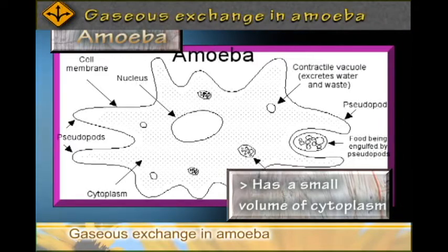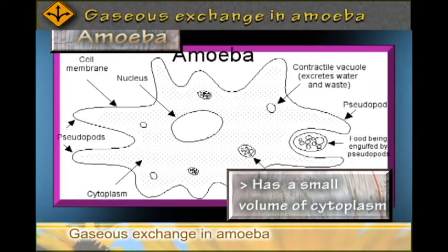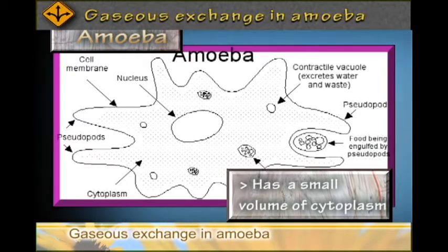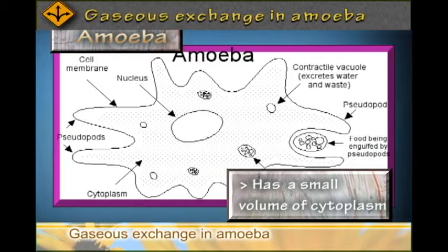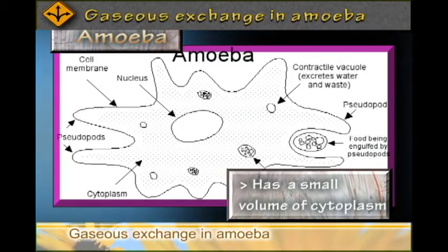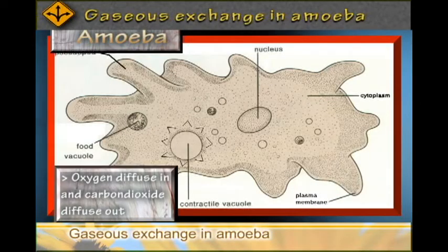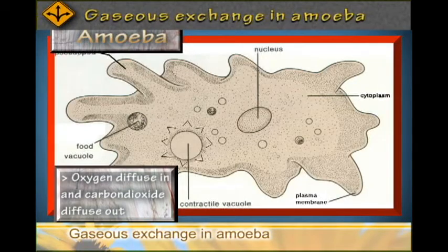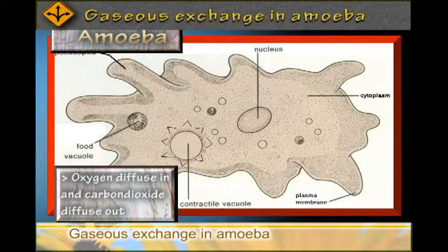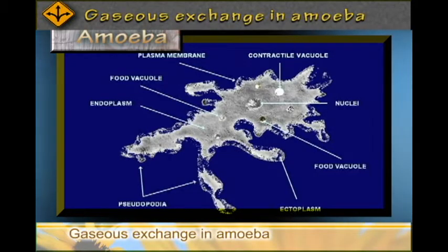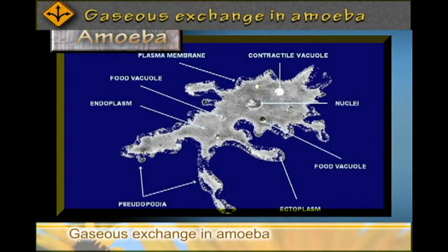The mode of gaseous exchange that takes place in the Amoeba is the diffusion of gas directly through the cell membrane into the cytoplasm. Oxygen diffuses in and carbon dioxide diffuses out. Gaseous exchange in Amoeba is very simple because it occurs by just diffusion across the cell membrane, since it is a single-celled organism.